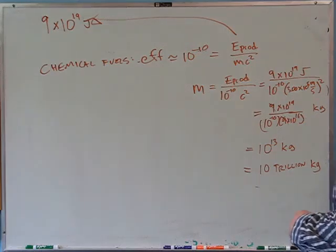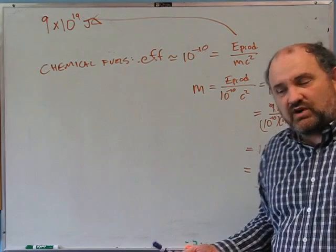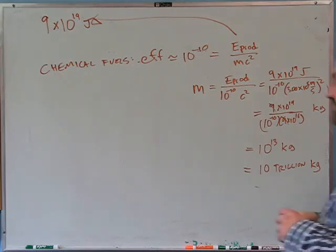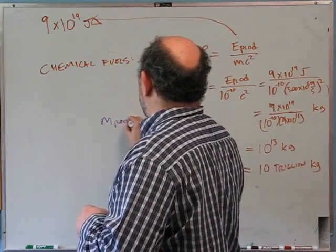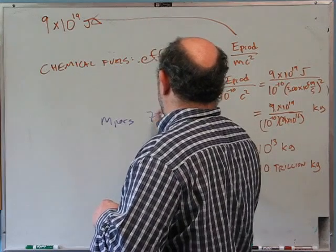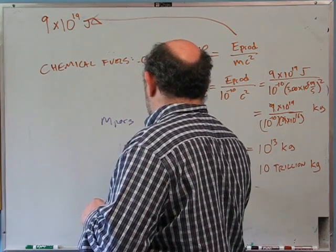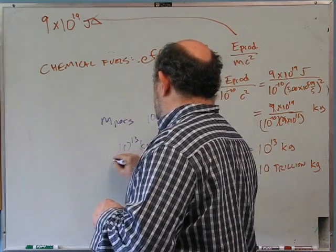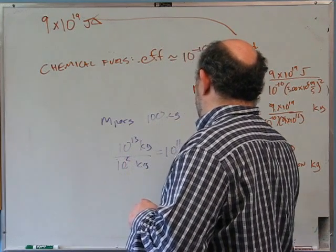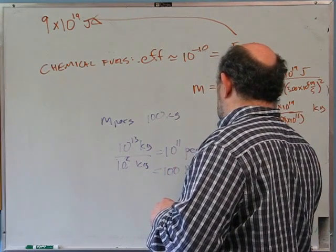Is that a lot? Let's think: the mass of a person is about 75–100 kilograms. So 10¹³ kg ÷ 100 kg/person = 10¹¹ people, which is 100 billion people. That's about 15 times the total mass of all humans on Earth — we'd have to burn that equivalent every year to produce our energy from chemical fuels.